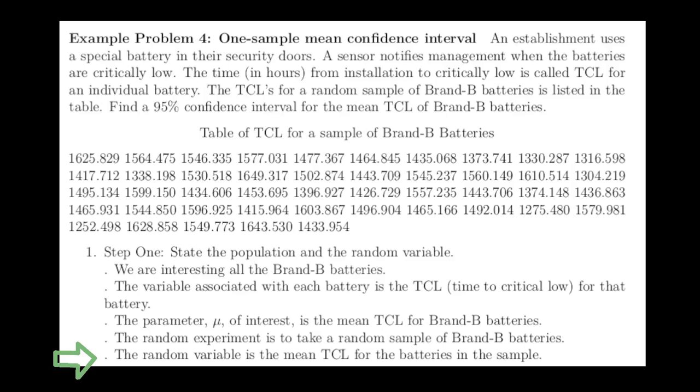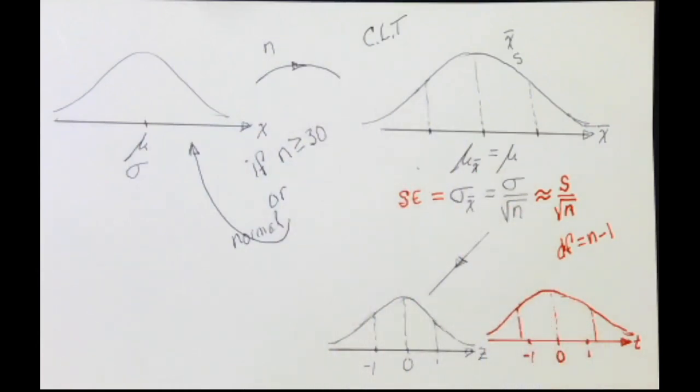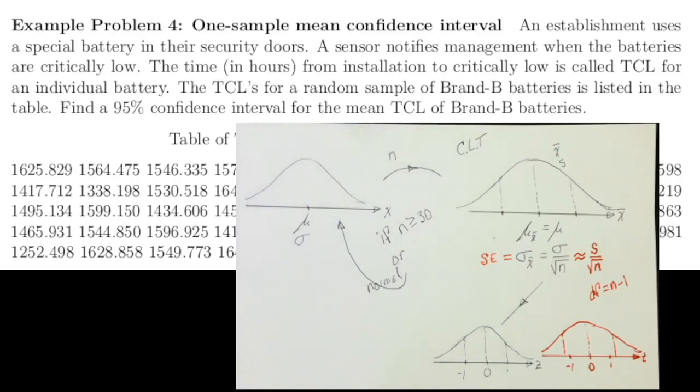The random variable is going to be the sample mean of those samples. The three-distribution diagram for a one-sample mean was developed in a previous video. We'll use it here to help build a roadmap for creating an R script to solve this one-sample mean confidence interval problem.